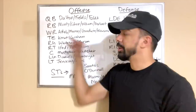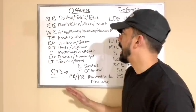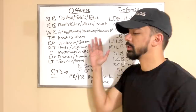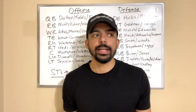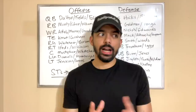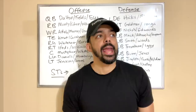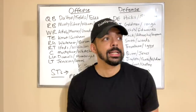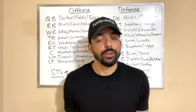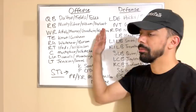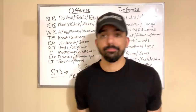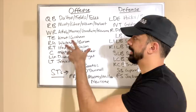Wide receiver: Allen Robinson, obviously our number one stud wide out. Darnell Mooney behind him, then Marquise Goodwin as number three, and Dazz Newsome fourth on the depth chart. You might be wondering where Anthony Miller and Riley Ridley are. Riley Ridley could make the roster but he never plays, so does it really matter? Anthony Miller - I just think the Bears are fed up with him and will look to trade or cut him. If he were on the roster he'd probably be number three or four, but I'm predicting he does not make it.